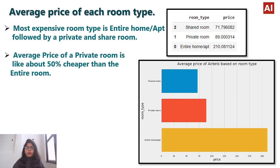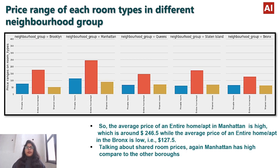Looking at average price of each room type — since the demand for entire home/apartment is greater, the average price is also likely larger. The most expensive room type is entire home/apartment, followed by private and shared rooms. The average price of a private room is about 50% cheaper than the entire home. The average price of entire home apartments in Manhattan is around $246.5, while in Bronx it is the lowest at $127.5.